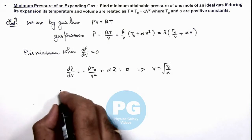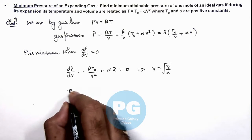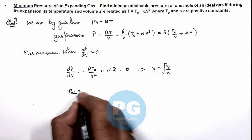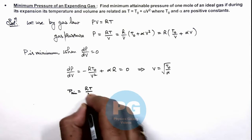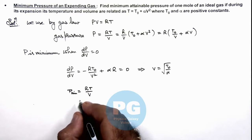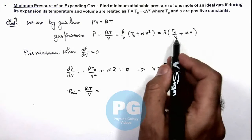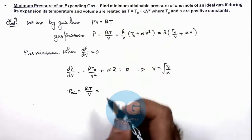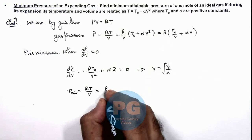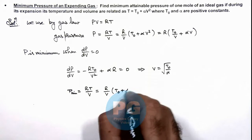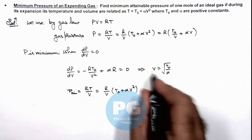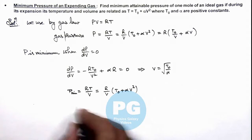So here we can calculate the minimum pressure. This can be given as RT/V. If we substitute the value of T, which is T₀ + αV², this gives R/V multiplied by (T₀ + αV²), and we can substitute V as √(T₀/α).